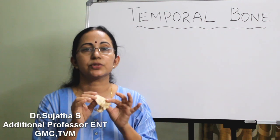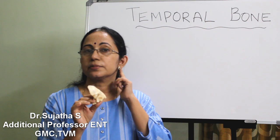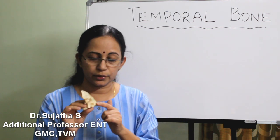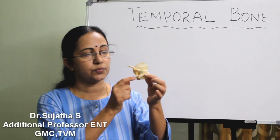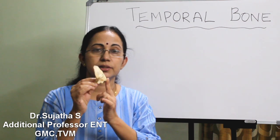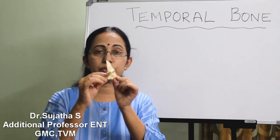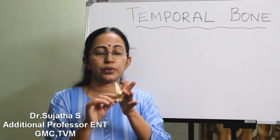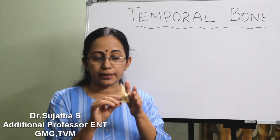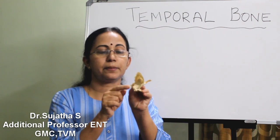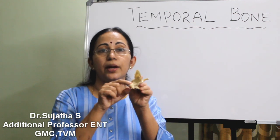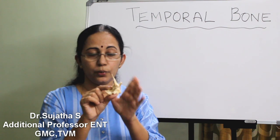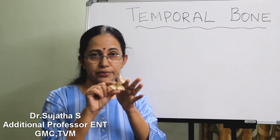First is identification of the side. The mastoid process comes posterior to the external auditory canal. This one forms the external auditory canal and posterior to it the mastoid process should be posterior. The zygomatic process should come laterally and the petrous apex should come antero-inferiorly. So which side is this? No confusion — this is left temporal bone.